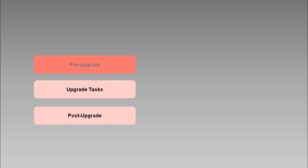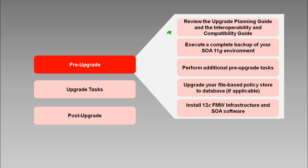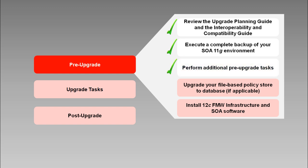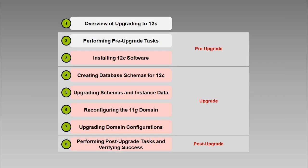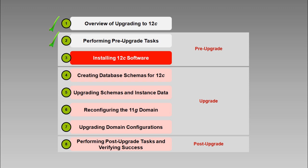So you've reviewed the documentation and ensured that your environment met the requirements. You've done a full backup and performed a few other tasks to prepare your environment for the upgrade. If you previously had a file-based policy store, you've upgraded that to a database-based store and taken another backup. Now you're ready for the last of the pre-upgrade tasks: installing the Fusion Middleware 12C infrastructure and SOA software. In the next video, installing 12C software, we'll discuss and demonstrate the software installation routine. Until then, I'm Ron Pinkerton. Thank you for your time and attention.